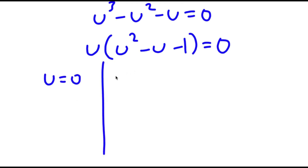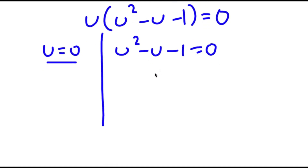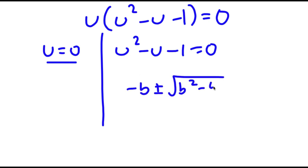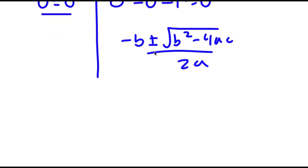I can divide this into two parts: u equals 0, and u squared minus u minus 1 is equal to 0. So u equals 0 is already a solution. To solve u squared minus u minus 1 equals 0, we use the quadratic formula, which is negative b plus or minus the square root of b squared minus 4ac over 2a. You should end up getting u equals 1 plus the square root of 5 over 2.